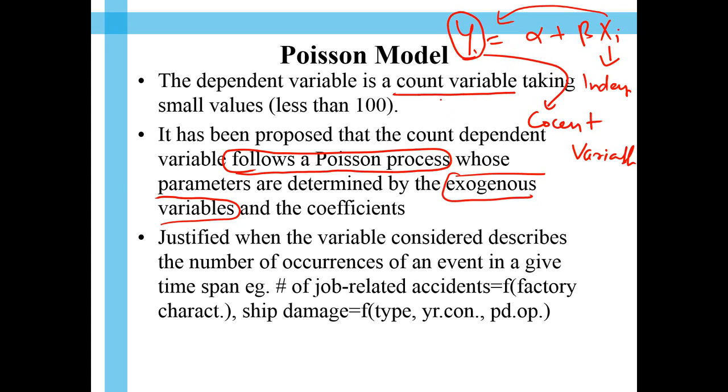For instance, counting the number of deaths from cancer in a given hospital. You can see the factors could be the number of doctors available, the number of patients who turned up. And these are some of the variables you can take as the independent variable to model for it.